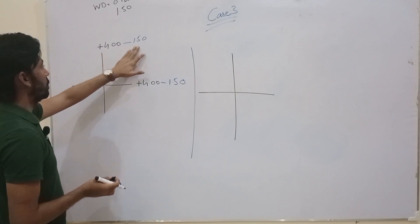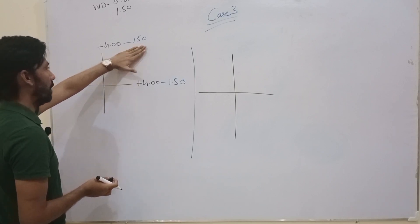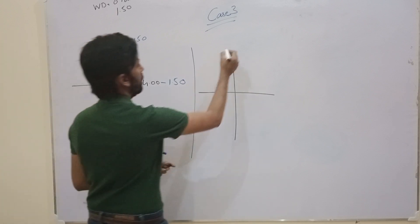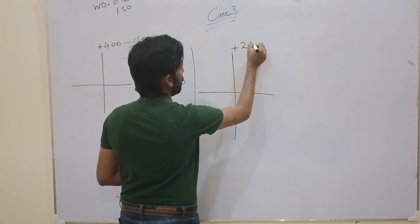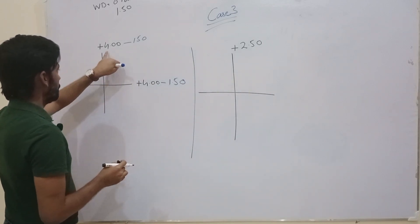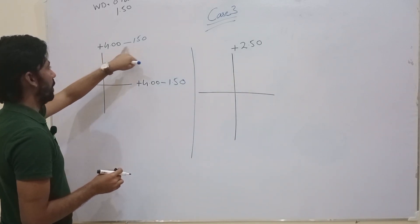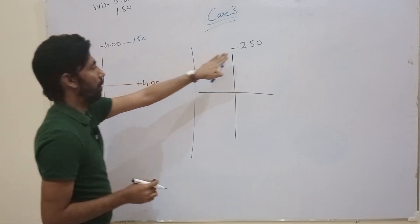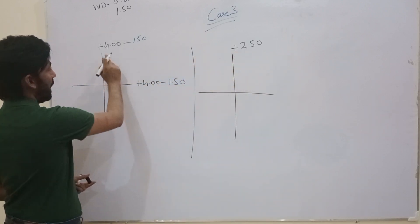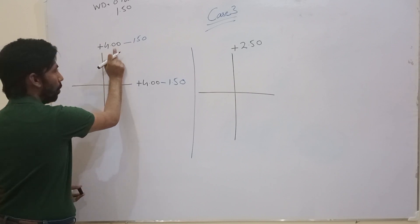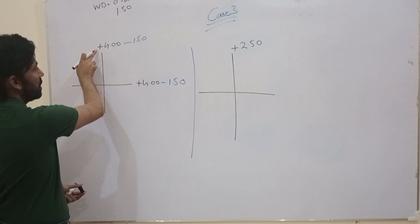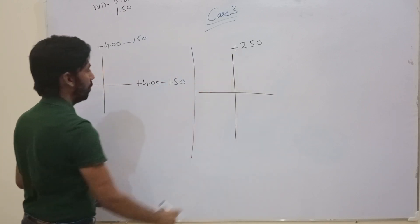We deduct minus 1.5 from +4, which gives us +2.5. The sign rule: the bigger value is 4, and the sign associated with the bigger value is plus, so we put a plus sign — giving us +2.5.